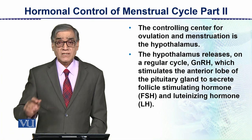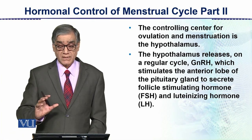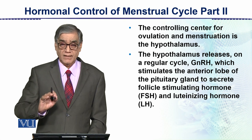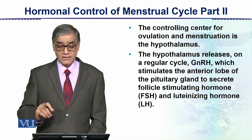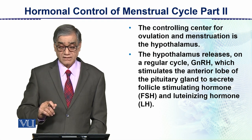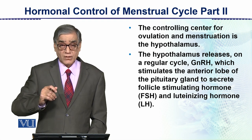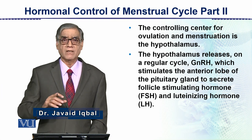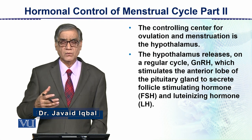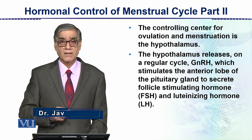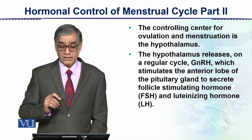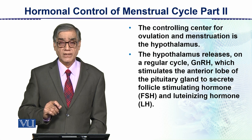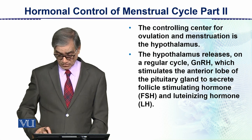The controlling center for ovulation and menstruation is in fact the brain. The brain's part is the hypothalamus. The hypothalamus releases on a regular cycle the gonadotropin-releasing hormone, GnRH, which includes FSH and LH. This stimulates the anterior lobe of the pituitary gland to secrete follicle stimulating hormone and luteinizing hormone.